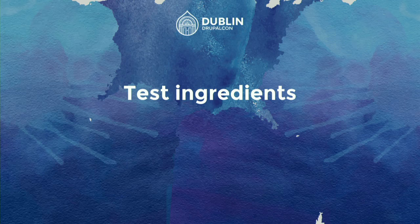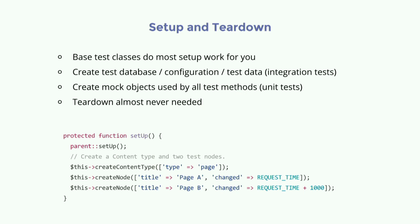Looking at test ingredients: we have setup methods in test classes that create things needed in every test method. The base classes handle database setup, configuration, and test data. In your own setup method, call the parent first — which installs databases and whatever else — then do your specific setup, like creating a content type and some nodes for testing. There's also a teardown function, though you probably won't need it often.